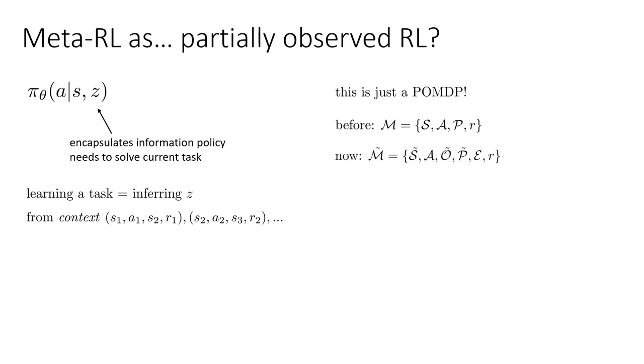So before you had an MDP with state S, actions A, and transition probability and so on. And now you have a modified partially observed MDP M tilde, with a modified state space S tilde, observation space O tilde, and transitions P tilde, where the modified state space consists of the original state and Z. So knowing the state means knowing S and knowing Z. But of course, you don't observe Z. What you observe is just S, as well as the reward in general.